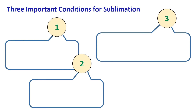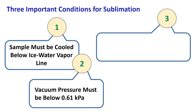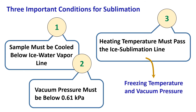Three important points to observe: First, the sample must be cooled below the ice-water vapor line. Second, the vacuum pressure must be below 0.61 kilopascal. Third, the heating temperature must pass the ice sublimation line depending on the freezing temperature and vacuum pressure. For example, if the freezing temperature is minus 40°C and pressure is 0.2 kilopascal, then the sublimation temperature should be at least more than minus 20°C, as observed from the sublimation line in the phase diagram.